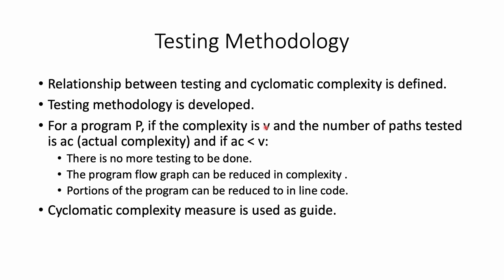All of this brings us back to testing, which is the motivation for proposing cyclomatic complexity. Consider program P with complexity measure V and number of paths tested AC. If AC, the actual paths tested, is less than the cyclomatic complexity, there is definitely a need for more testing — more paths must be tested, or the complexity of the program should be reduced by removing decisions or simplifying the code. Cyclomatic complexity serves as a guide for testing: comparing actual paths tested against it helps discover untested paths and identify modules that will be difficult to test or maintain.